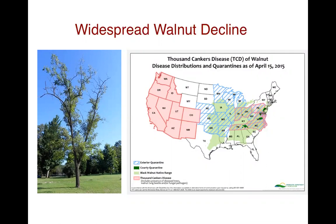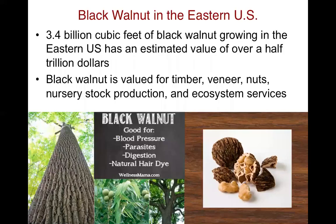In 2010, TCD was detected in Knoxville, Tennessee — the first discovery within the native range of black walnut. Most recently, it's been found in Butler County, Ohio, and the pathogen has also been found in Indiana, some of the work I'm going to talk about today.